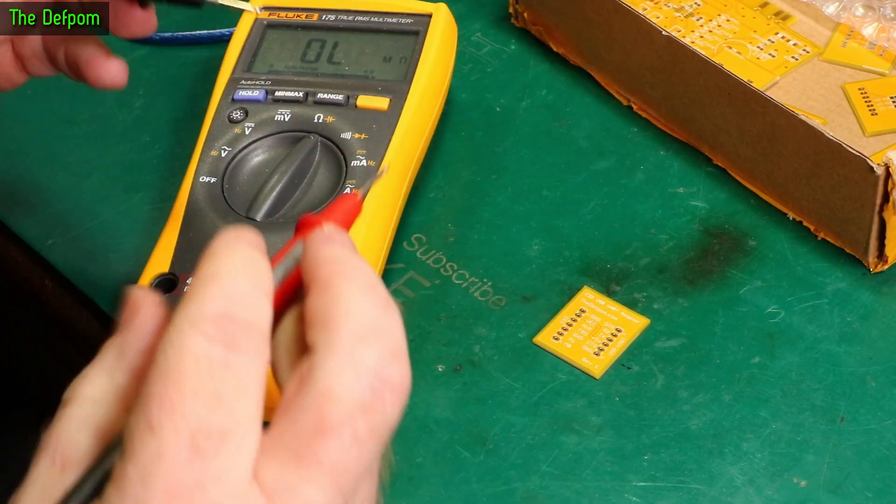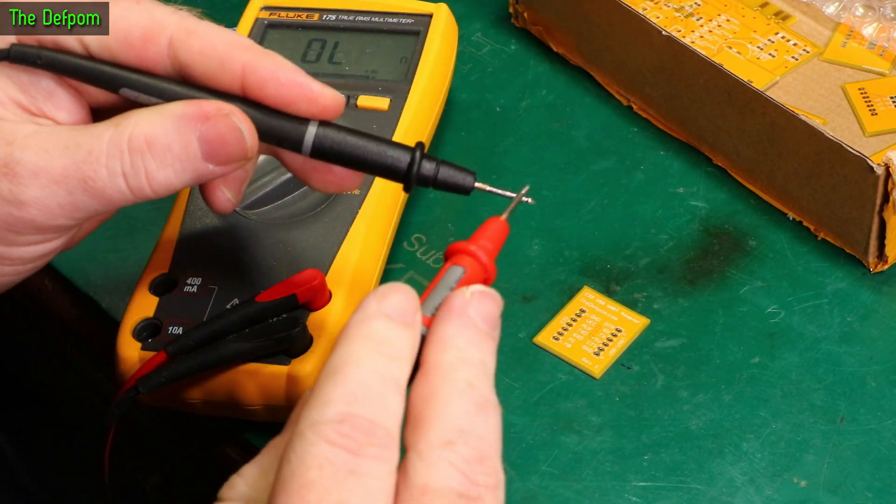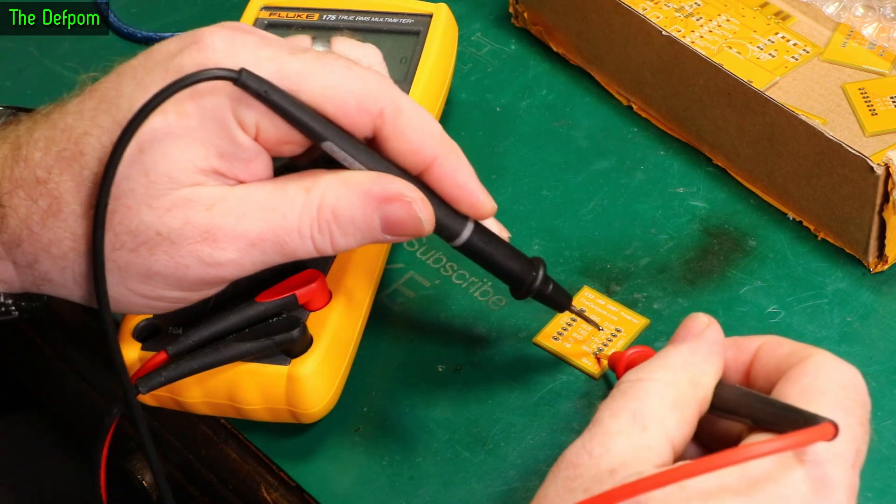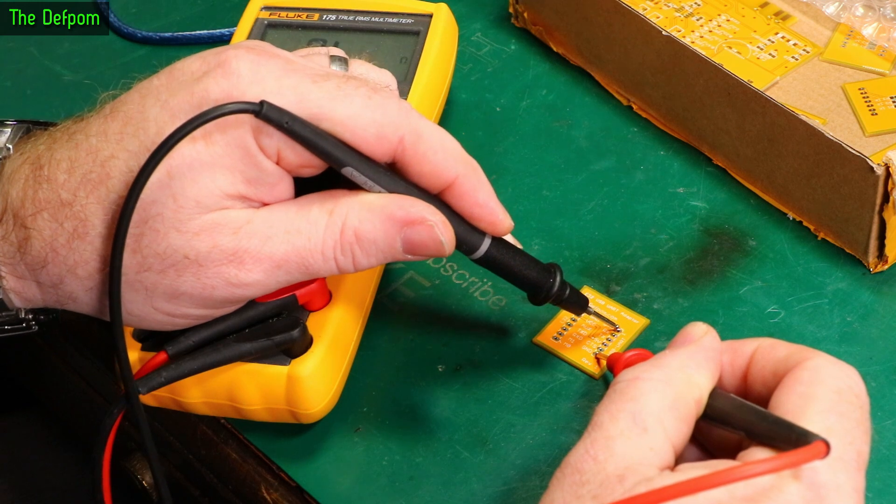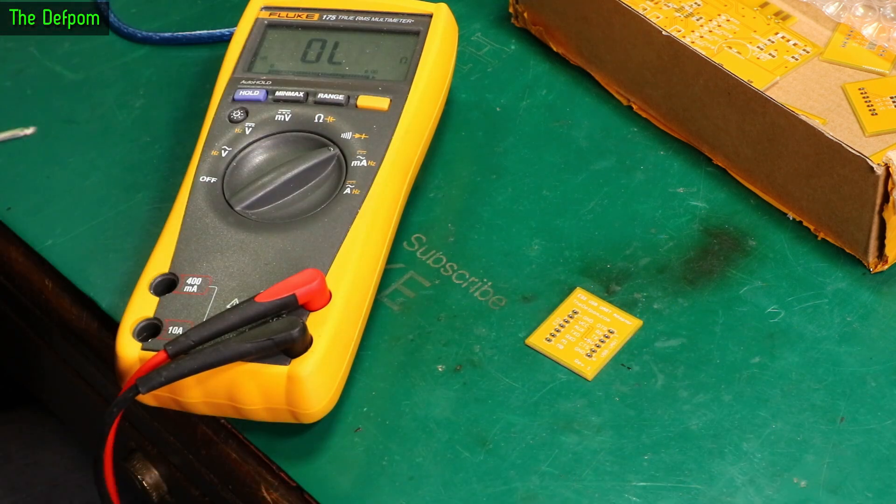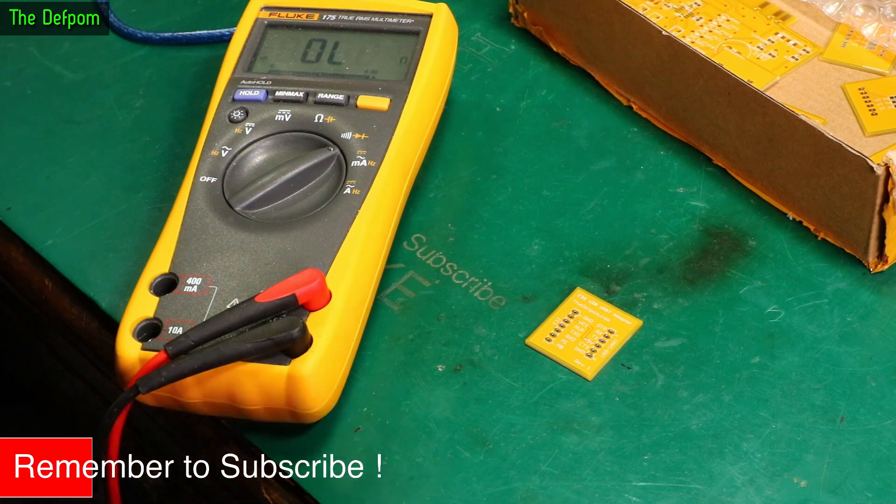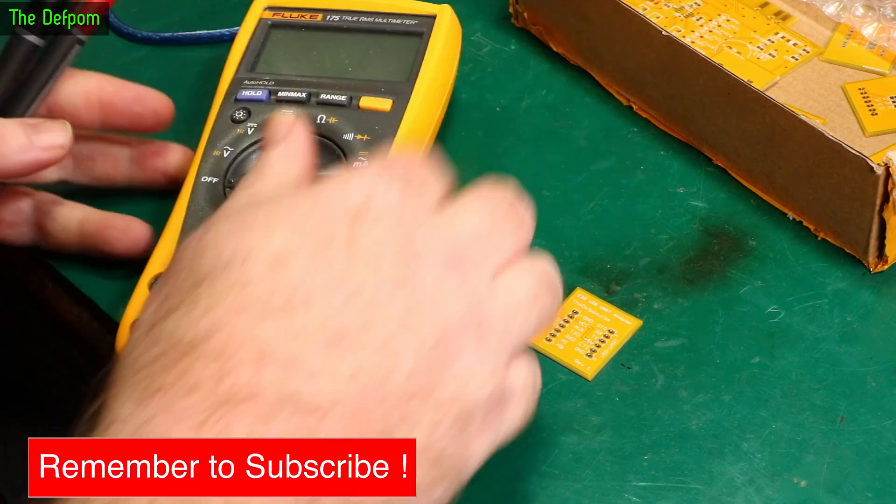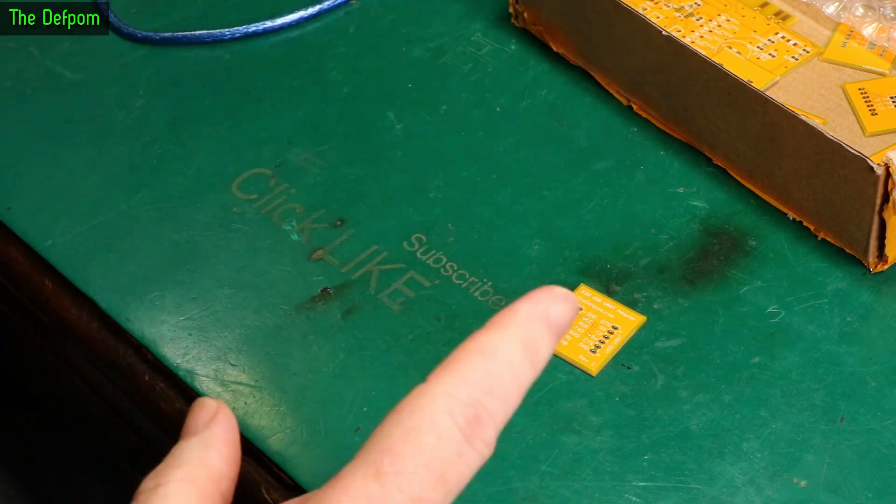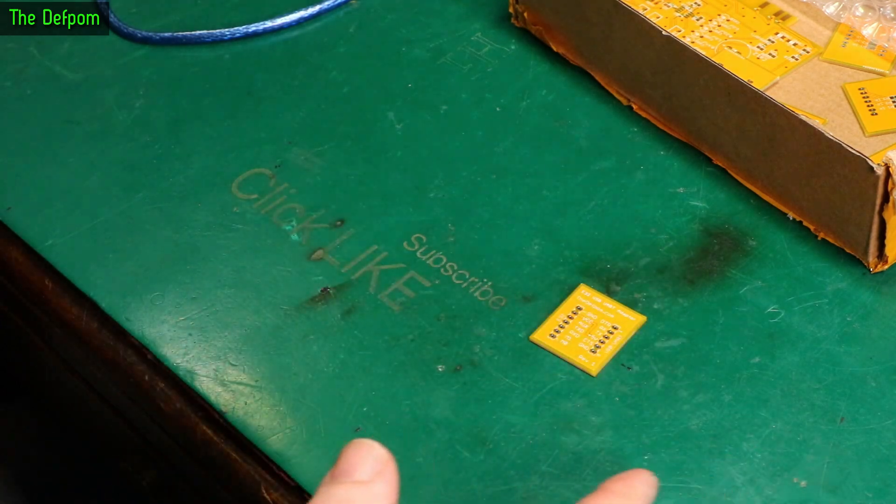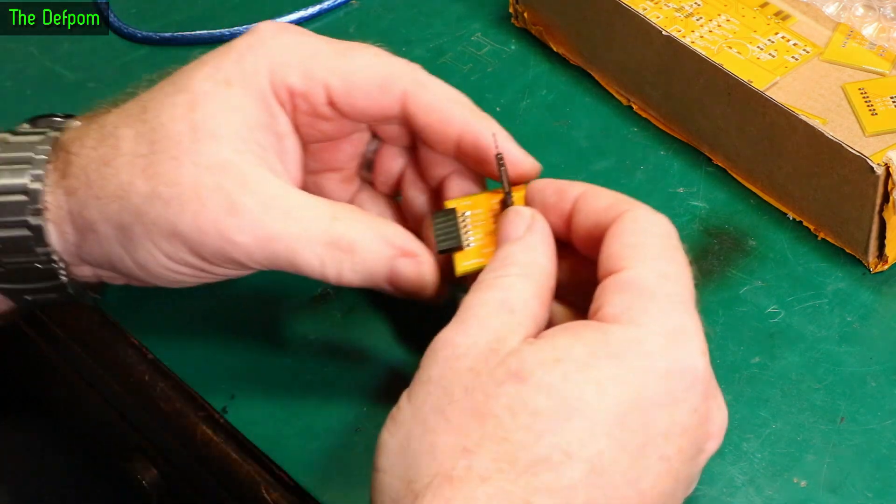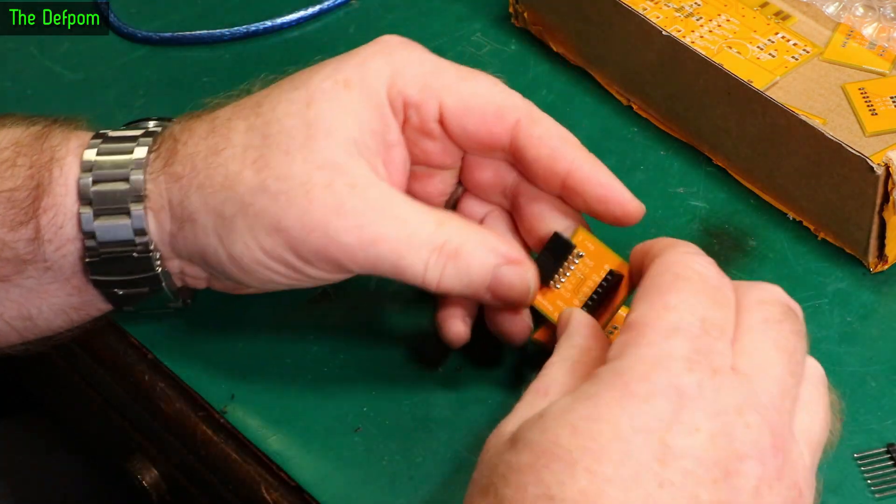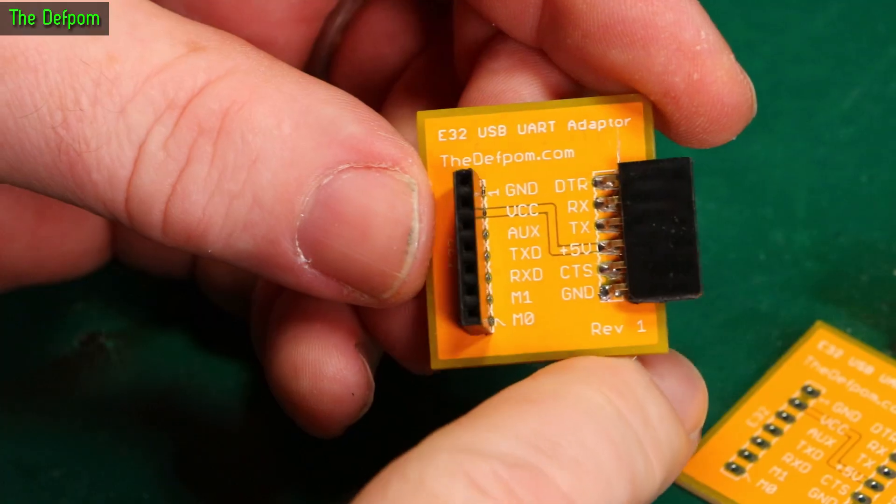So we've got the Fluke 175 here. Get on continuity. Ground pad. Yeah, that ain't right. So I'm actually going to make this available to people. I've already fixed the design. Obviously, I'm going to make the broken design available to people. So I actually built one up already. So instead of assembling one, I'm going to show you what I built. So there's the built version.